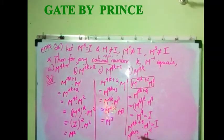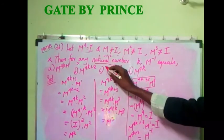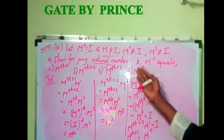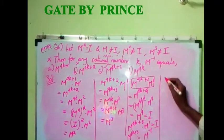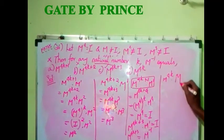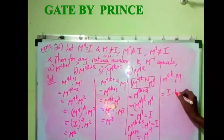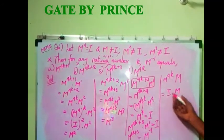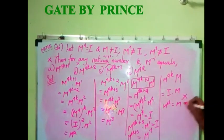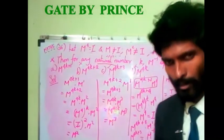So option C gives us m inverse — that's the correct answer. We also verify option D: m power 4k multiplied by m equals I into m equals m, which is not m inverse. So option D is not right, and option C is confirmed correct.